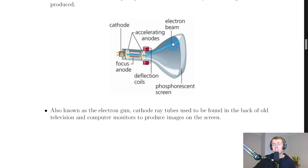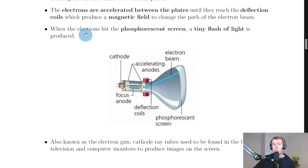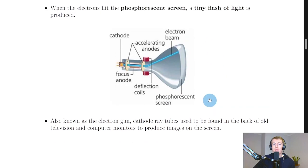When the electrons hit the phosphorescent screen, which is on the right hand side, a tiny flash of light is produced. Where do we see this kind of thing used?